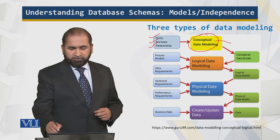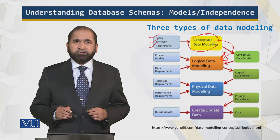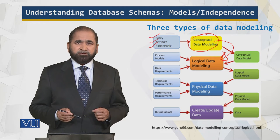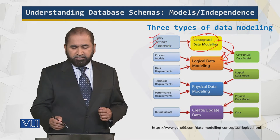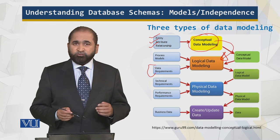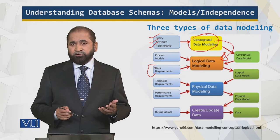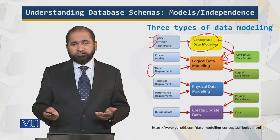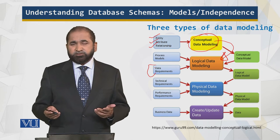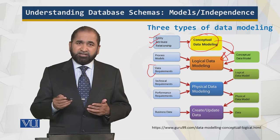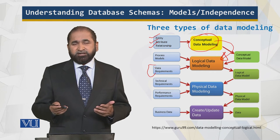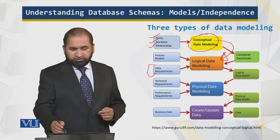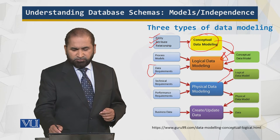Using the conceptual data model, we then build the logical data model. In the logical data model, we have process models — how things are going to be done — and data requirements. For example, if we want to compute the age of the student or the GPA, we need the date of birth to compute the age, and we need the grades to compute the GPA. Once we have this logical data model, we move to physical modeling.